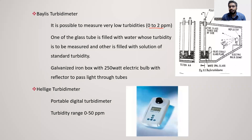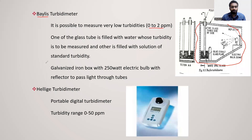In the Bayless turbidimeter, there are two glass tubes: one for the test solution and one for the standard. This is housed in a galvanized iron box. We also have a portable digital electric turbidity meter with a turbidity range of 0 to 50 parts per million.